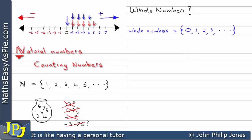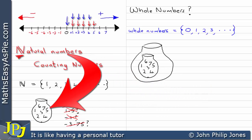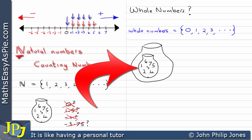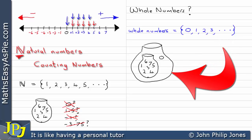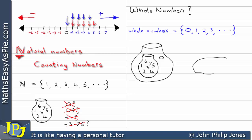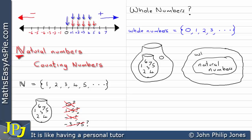We can draw a container for all of the whole numbers. What goes in this container? Whole numbers. And we've seen that the whole numbers contain all of the counting numbers, so I'm going to put the natural numbers bag inside it — containing 1, 2, 3, 4, 5, etc. — along with the zero. So this container holds zero and all of the natural numbers. We can also show this as a smaller area representing natural numbers contained within a larger area representing whole numbers, with zero in the outer region.